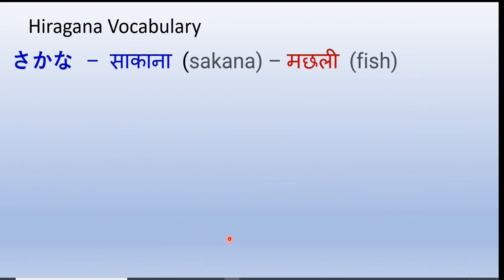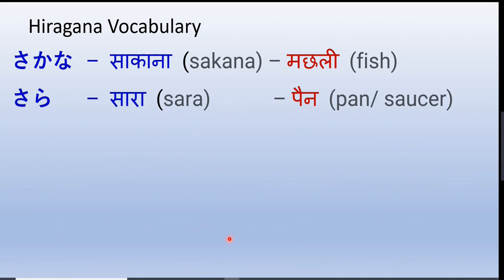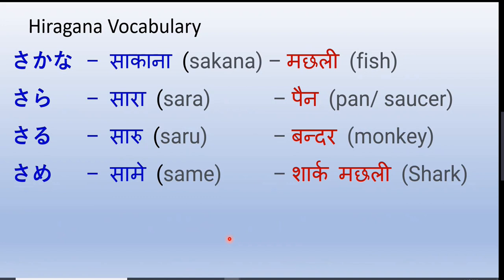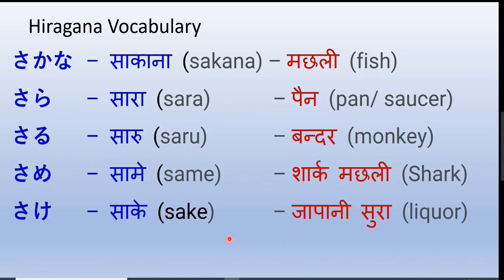Sakana — fish. Sara — a pan or saucer. Saru — monkey. Same — shark. Sake — a special kind of alcoholic drink, a specialty of Japan; it's a Japanese liquor.